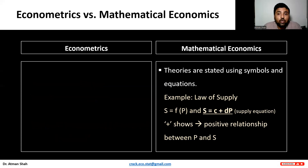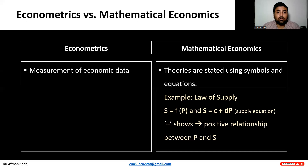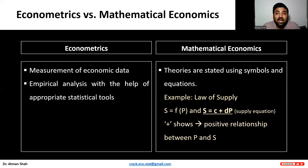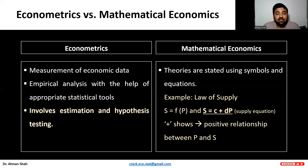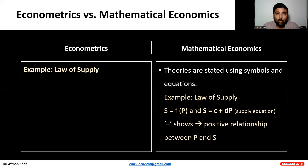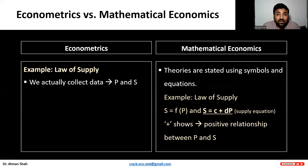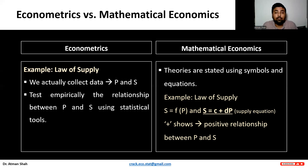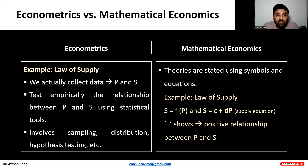Now, what is the difference between econometrics and mathematical economics? Econometrics is all about measurement of economic data. We do empirical analysis with the help of appropriate statistical tools, and therefore econometrics involves statistical methods, hypothesis testing, and estimation of parameters. In econometrics, we actually collect data on price and quantity supplied and then do empirical analysis using appropriate statistical tools — which involves sampling, distribution, and hypothesis testing. This is the basic difference between econometrics and mathematical economics.